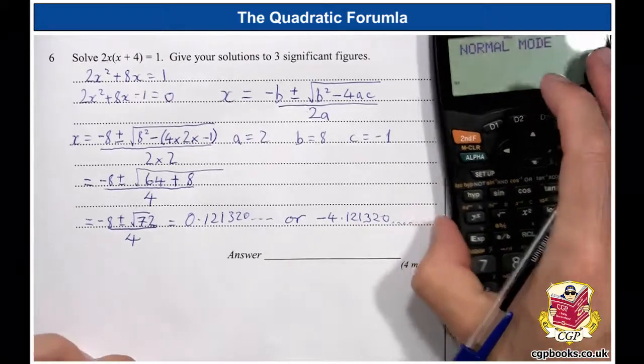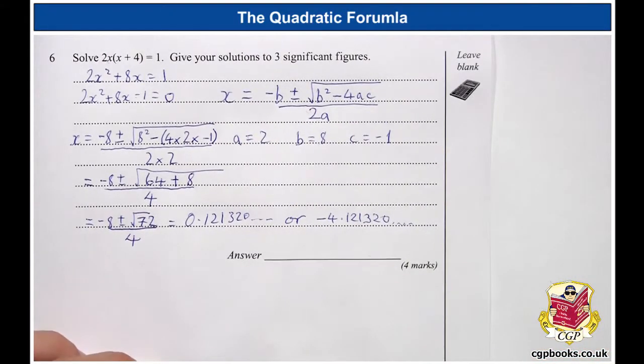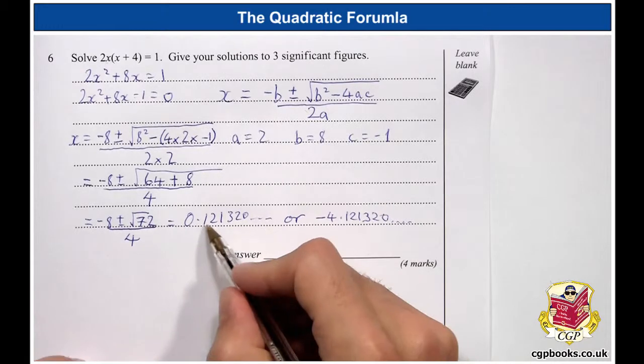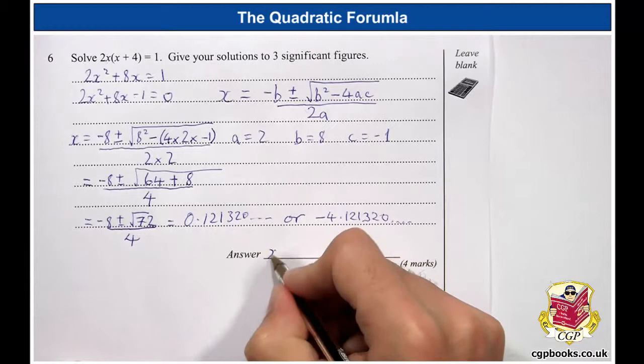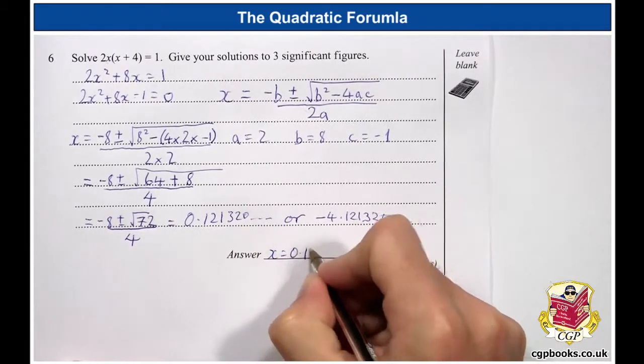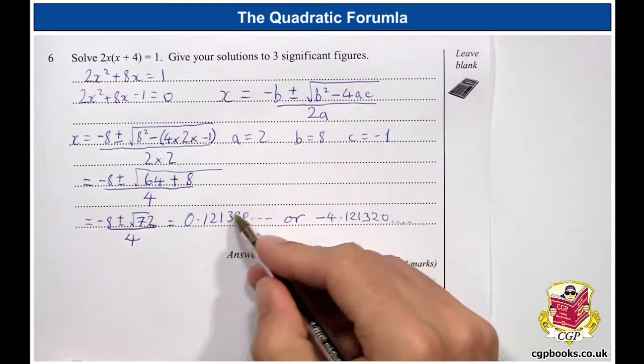So, there are two solutions, but we need to have it as three significant figures. So, here it's going to be 1, 2, 3. We can ignore that 0. So, x equals 0.1, 2, 1. We don't need to round up there.